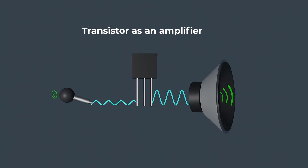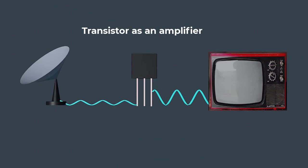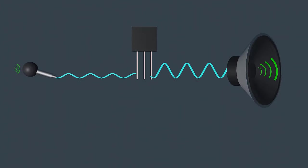A transistor can also be used to amplify weak signals, such as those from a microphone or TV antenna. This is essential for many electronic devices, such as amplifiers and radios.